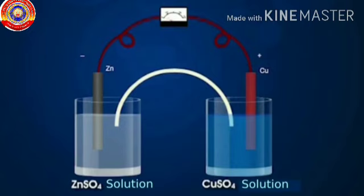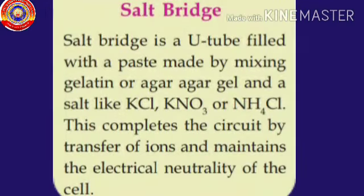A salt bridge is a U tube filled with a paste made by mixing gelatin or agar agar gel and a salt like potassium chloride, potassium nitrate or ammonium chloride. Do you know why the salt bridge is used in this cell? It completes the circuit by transfer of ions and maintains the electrical neutrality of the cell.